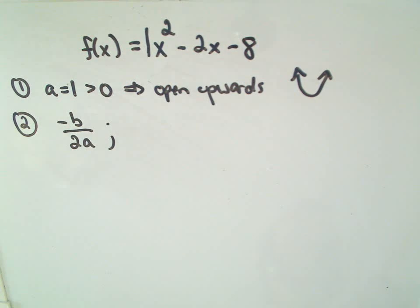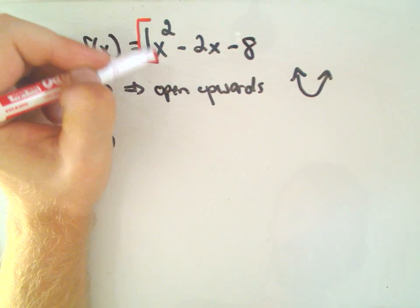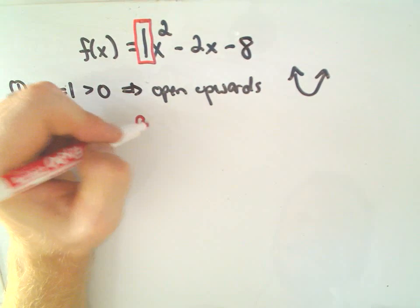Again, a is the number in front of x². So our a value, in this case, will be 1.